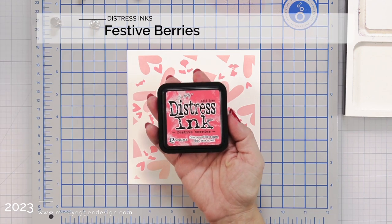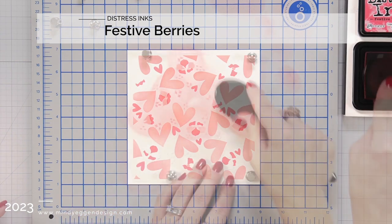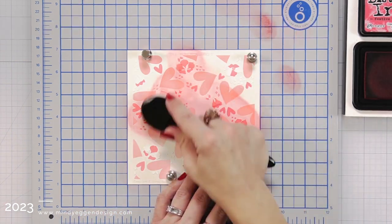So this is a really nice bright red. Once again, I'm going to pick that up with that same blending brush and apply that over the open areas of the stencil.